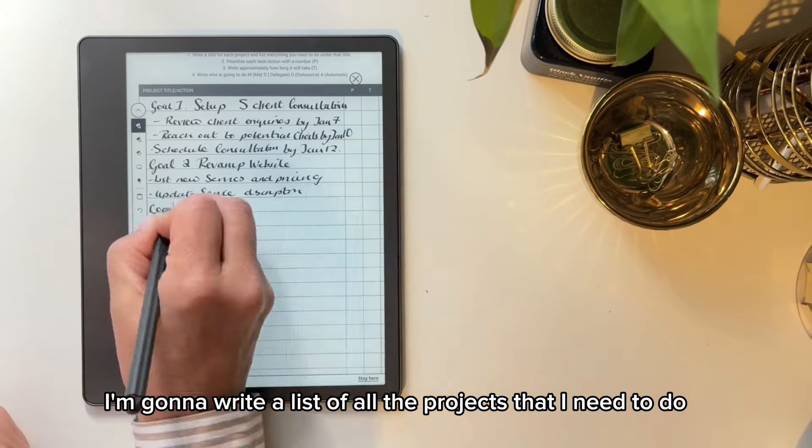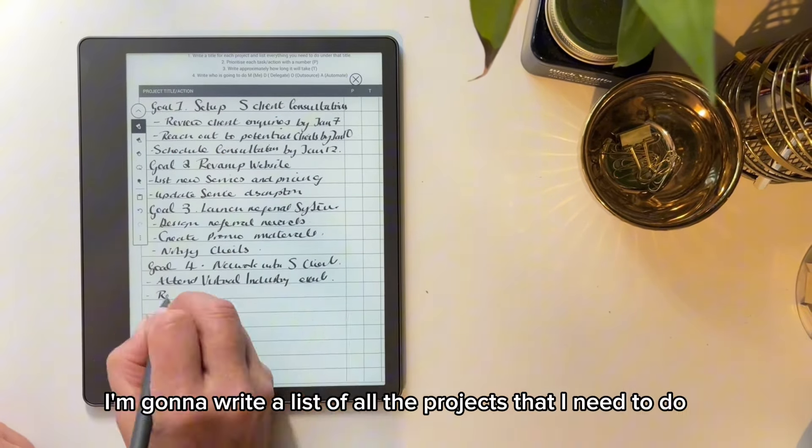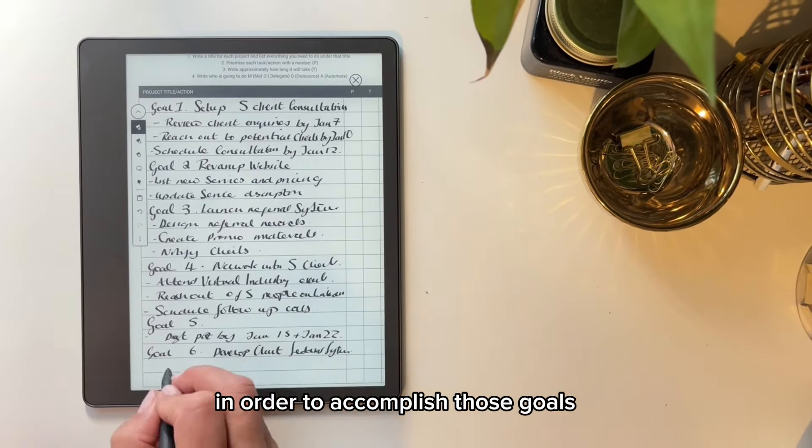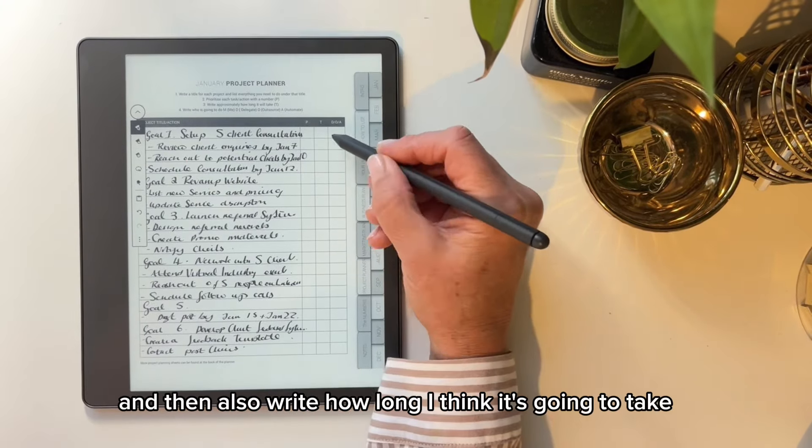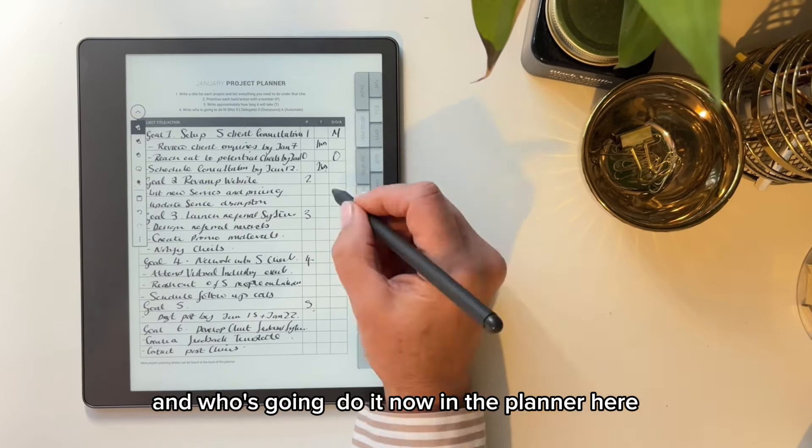So once I've written those goals, I'm going to write a list of all the projects that I need to do in order to accomplish those goals. I'm also going to write a priority number by each item and then also write how long I think it's going to take and who's going to do it.